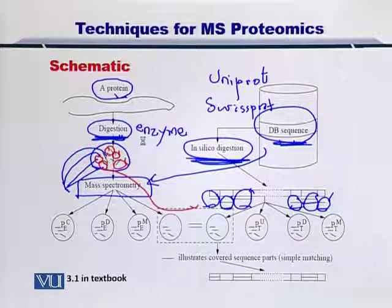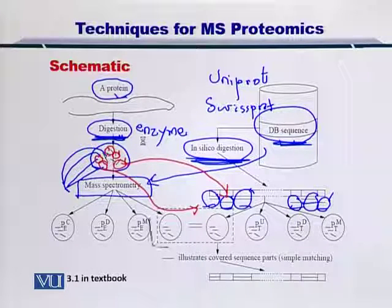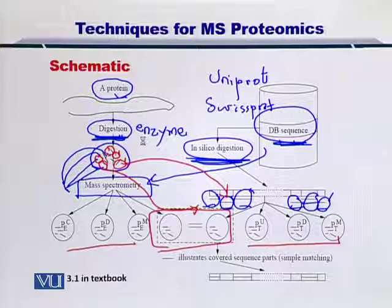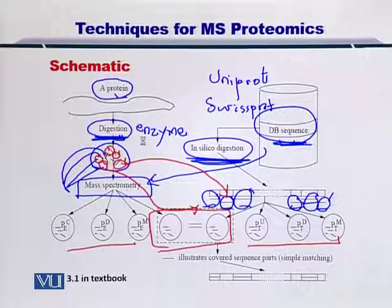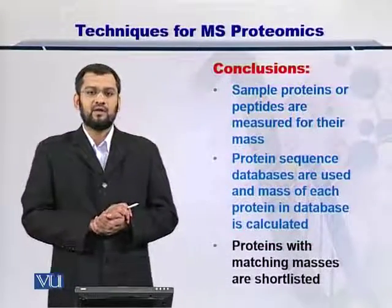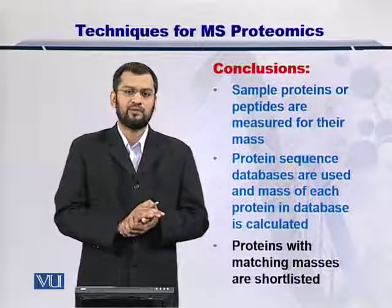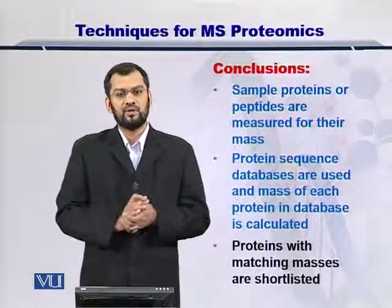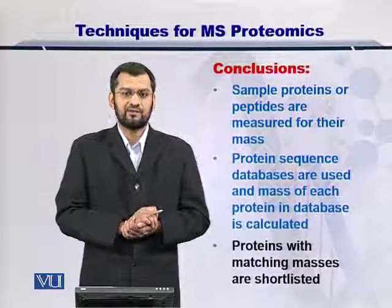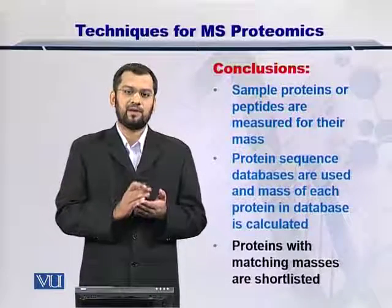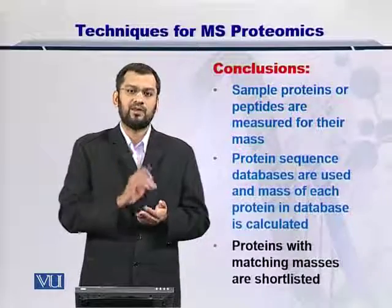Once you compare them, you can arrive at the matches. Some of the fragments will match, but others may not. Depending upon the number of matches, you can assess the quality of the sequence match. This diagram is given in figure 3.1 in your textbook for further perusal. To summarize: peptides are measured for their mass using a mass spectrometer, these masses are compared with proteins or peptides from protein sequence databases, and a scoring method is used to count how many peptides from the experiment match with the peptides from the in silico digestion.